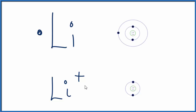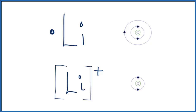So you could just write Li+ for the Lewis structure. But realize that underneath there are these two electrons and this outer shell underneath that's full. And that's why lithium loses that electron — to gain that full outer shell, which is more stable. Sometimes you'll see the Lewis structure with Li+ with brackets around the Li. Either way is okay. This is Dr. B with the Lewis structure for Li+, and thanks for watching.